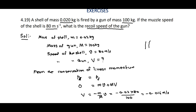So the gun of mass M recoils with speed 0.016 m/s in the backward direction while the bullet moves forward at 80 m/s. Thank you.